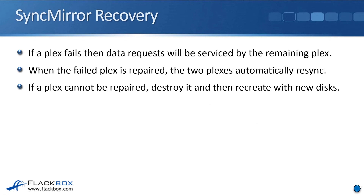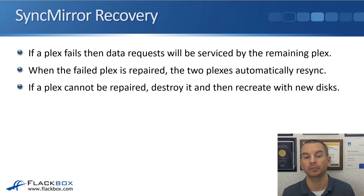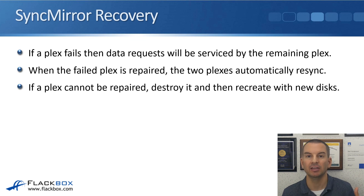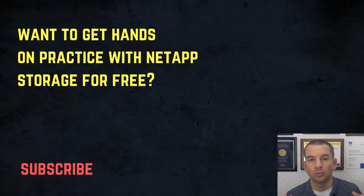If a plex fails, data requests will be serviced by the remaining plex. With data mirrored across the two plexes, if one plex fails, the other plex can still serve clients. When the failed plex is repaired, the two plexes will automatically resync with each other. If the plex cannot be repaired, you get the aggregate back to a SyncMirror state by destroying the failed plex and recreating the SyncMirror with new disks from the relevant pool.